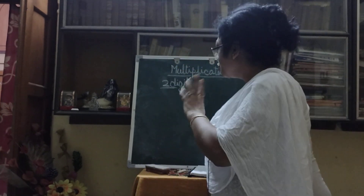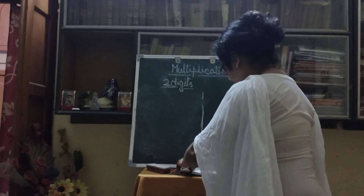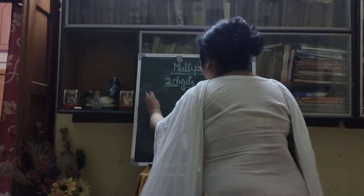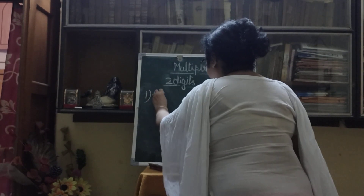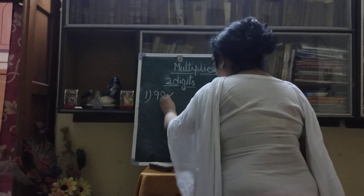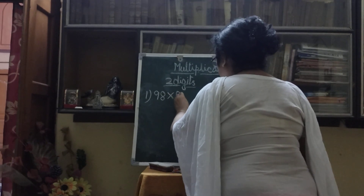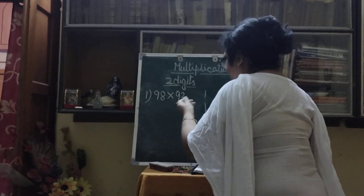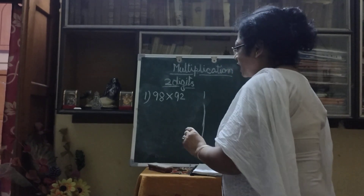First I am taking two digit numbers. I am taking 98. Bigger number I am taking. 98 multiplied by 92, which are nearer to 100. We are taking those numbers.